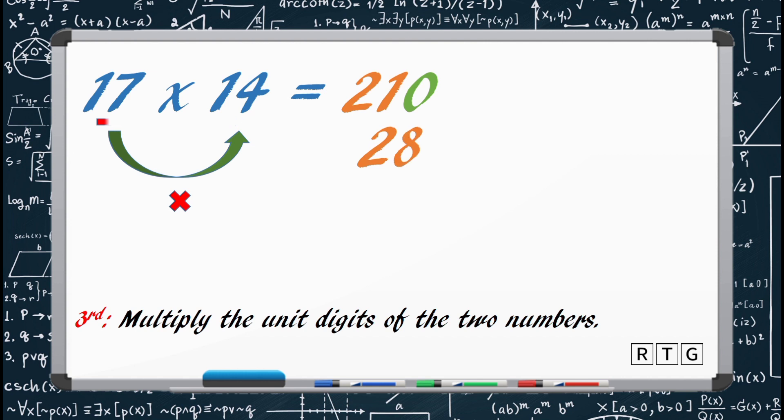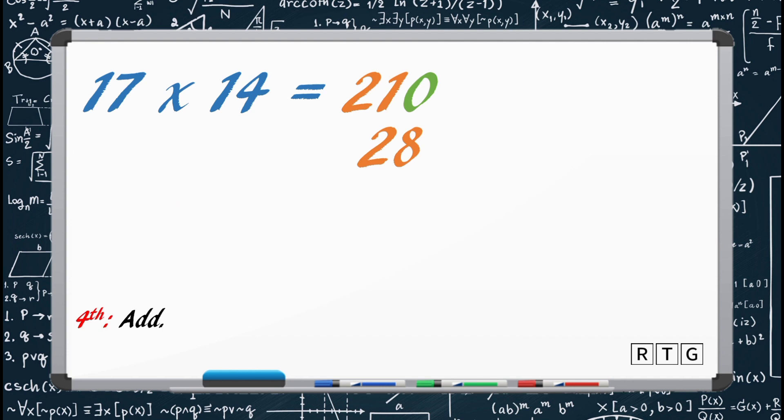Now, for the last step, we only have to add the 28 to 210. 210 plus 28 equals 238. And that will be the product of 17 and 14. 17 times 14 equals 238.